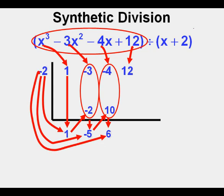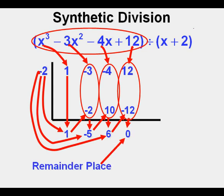Then we take the negative 2 and multiply it by the 6 here. And we place the product of negative 2 and 6, which is negative 12, here. Now we take the sum of 12 and negative 12, which is 0, and place it here below in the remainder place.